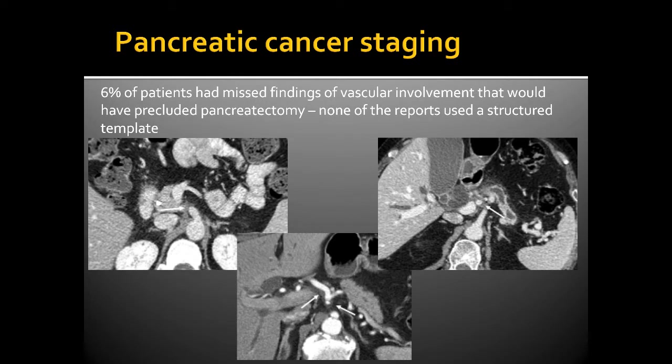In a retrospective study looking at cancer patients with pancreatic cancer who went on to pancreatectomy, we found that 6% of patients had missed findings of vascular involvement that would have precluded pancreatectomy. None of those reports used a structured template. If they had used a structured template with fields specific to each one of those vessels, these findings likely would not have been missed.